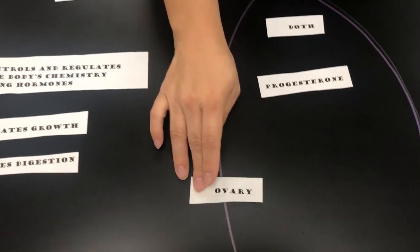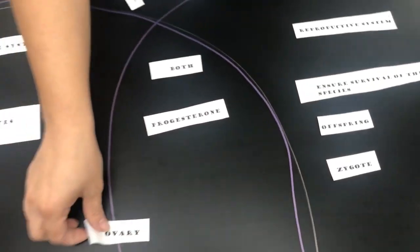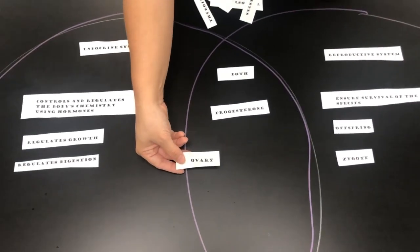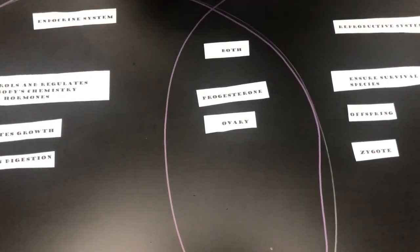Now here we have the term ovary. The ovary is part of the reproductive system, but the ovaries produce hormones, specifically like progesterone. So we would put ovary under both.